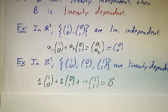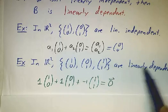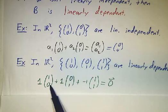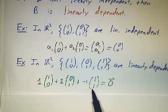On the other hand, the vectors (1,0), (0,1), and (1,1) are linearly dependent, because 1 times the first vector plus 1 times the second vector plus negative 1 times the third vector is 0.